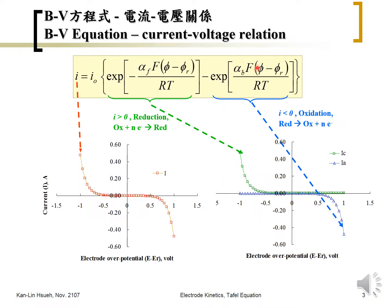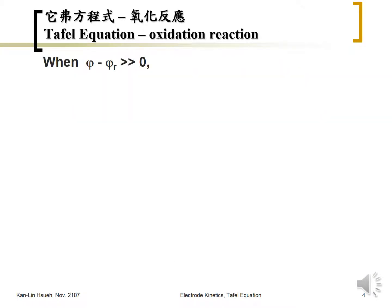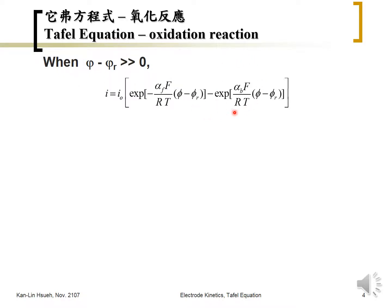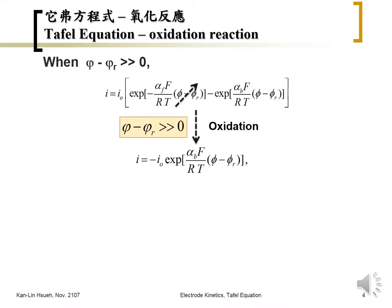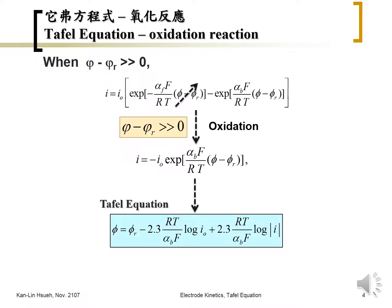This means we ignored one of the terms here. When the overpotential phi minus phi_r is greater than zero — is positive — since there is a negative sign over here, this term can be neglected if this value is very large. Only this term would exist. So this equation can be simplified — we only take this term into consideration, and then we take the logarithm on both sides. This is called the Tafel equation.